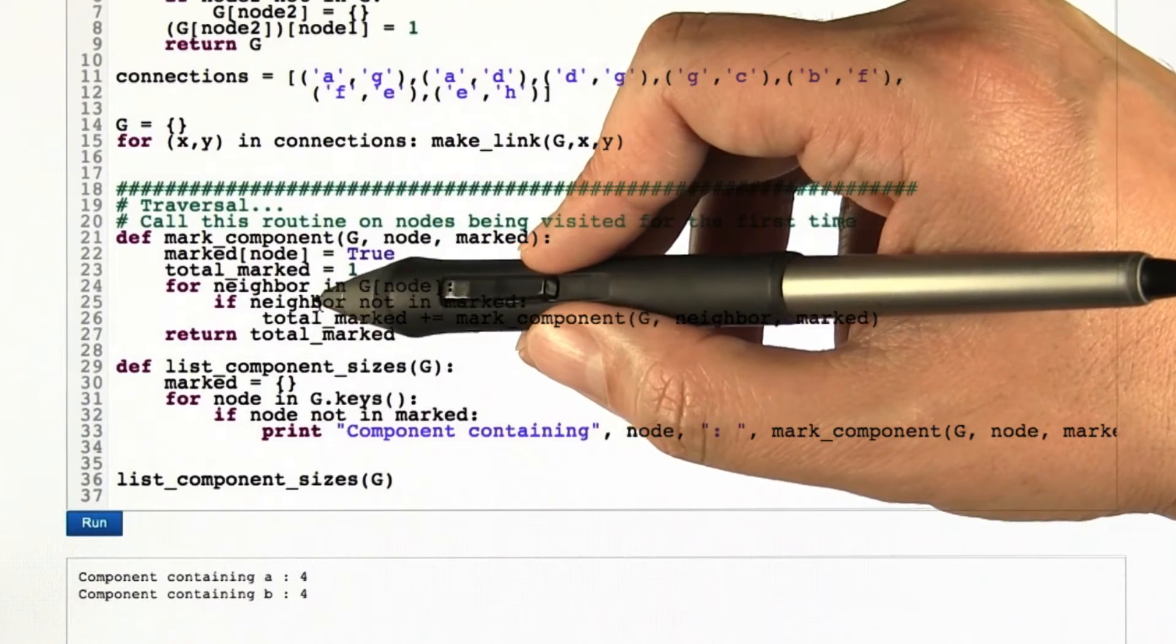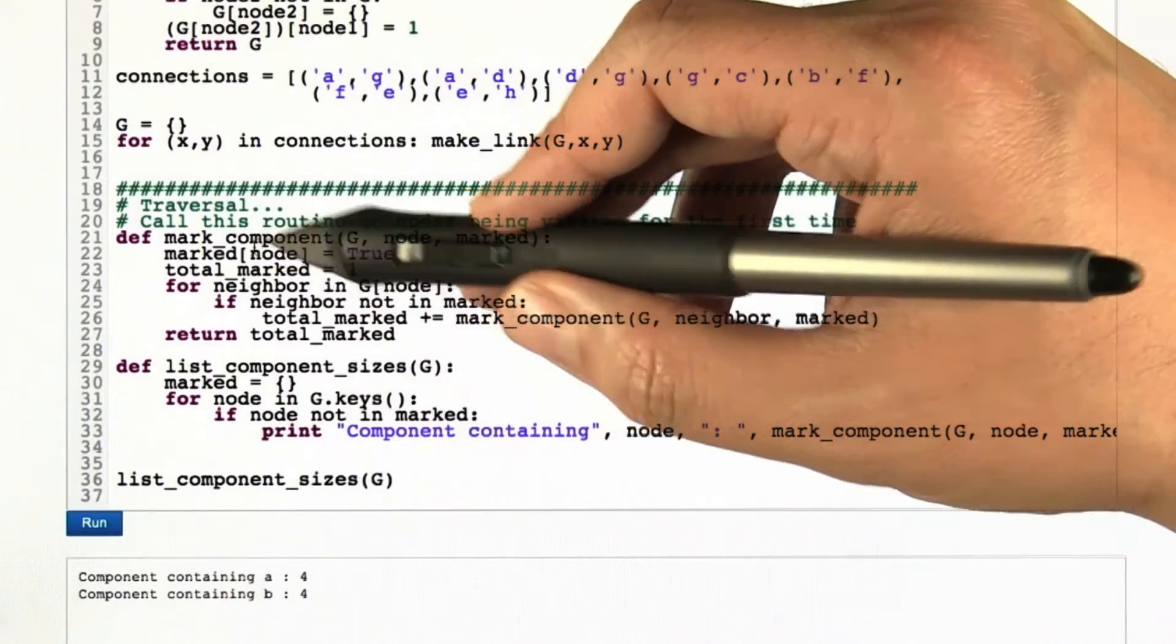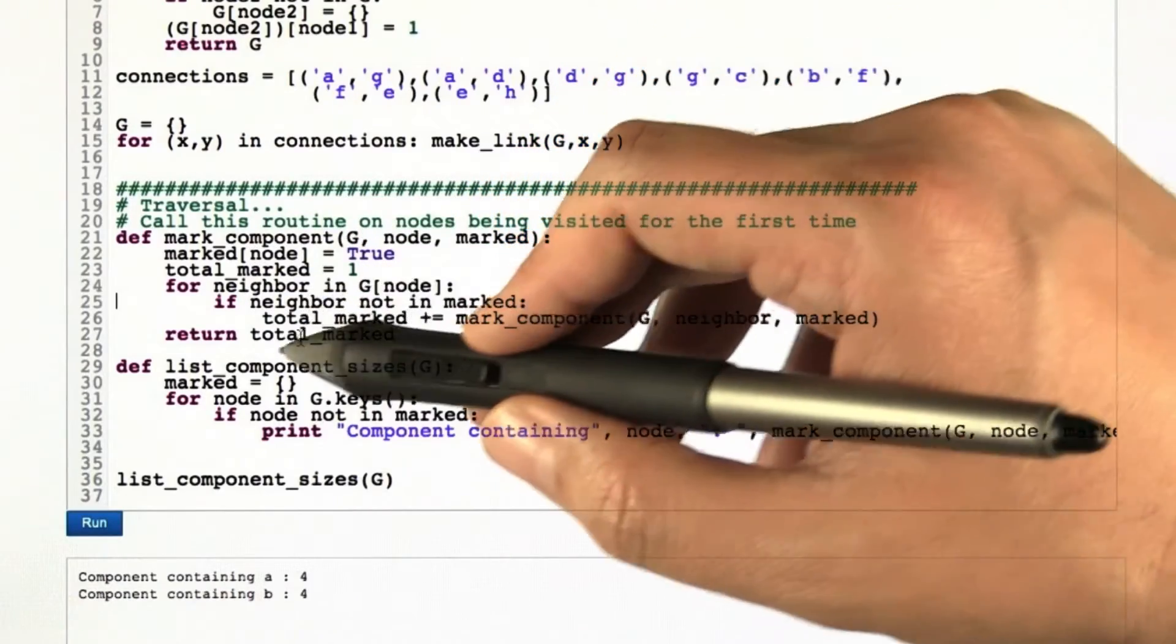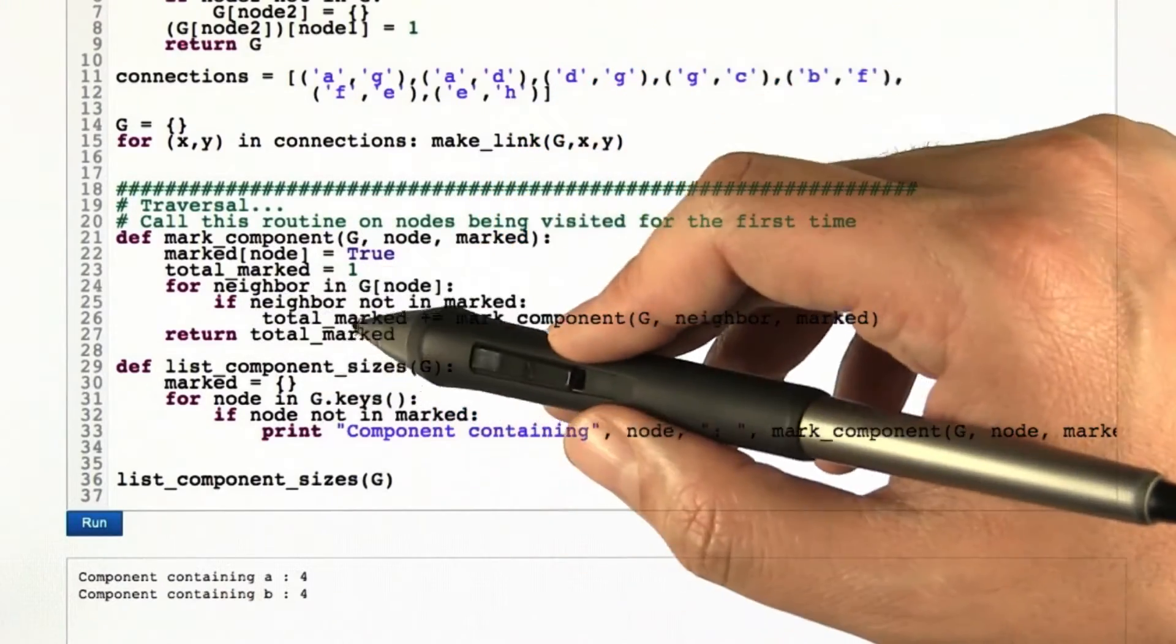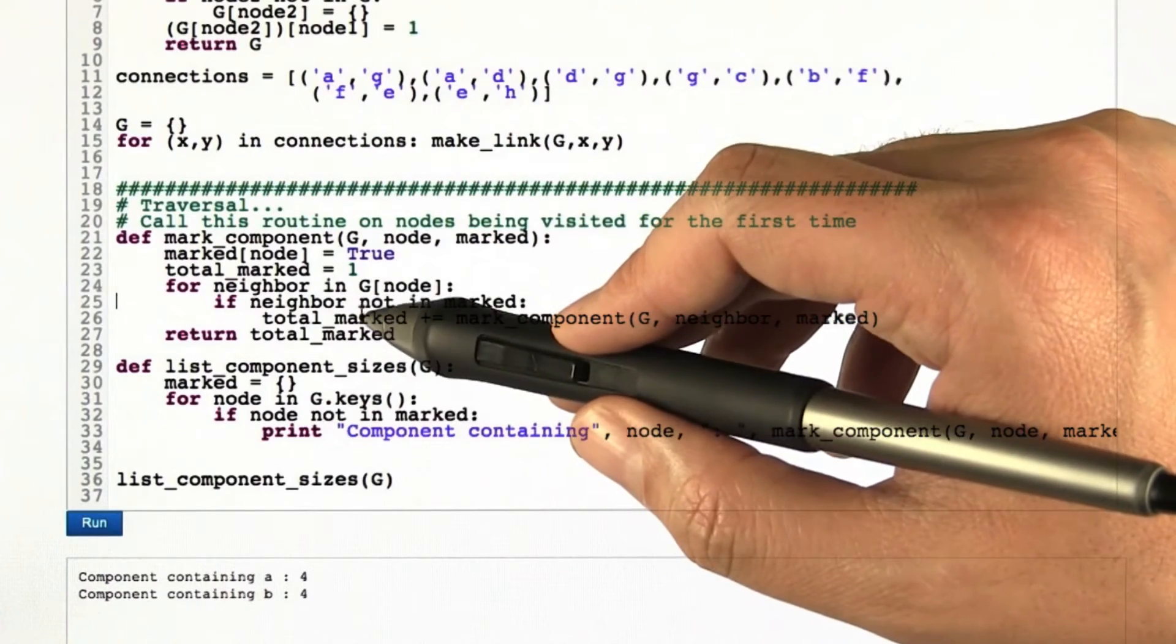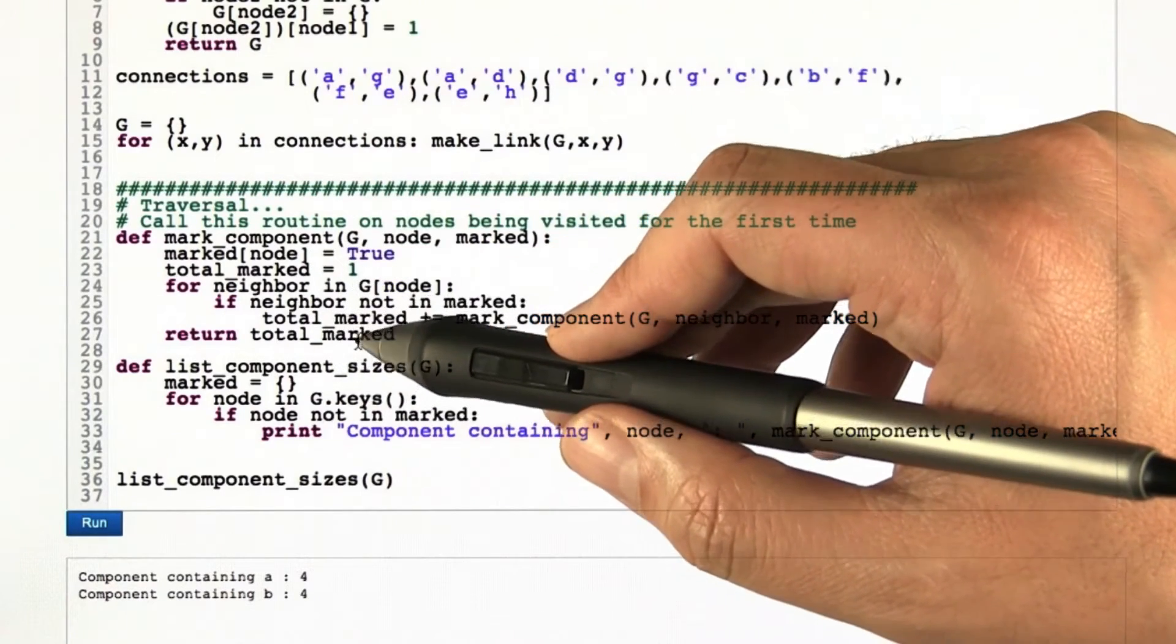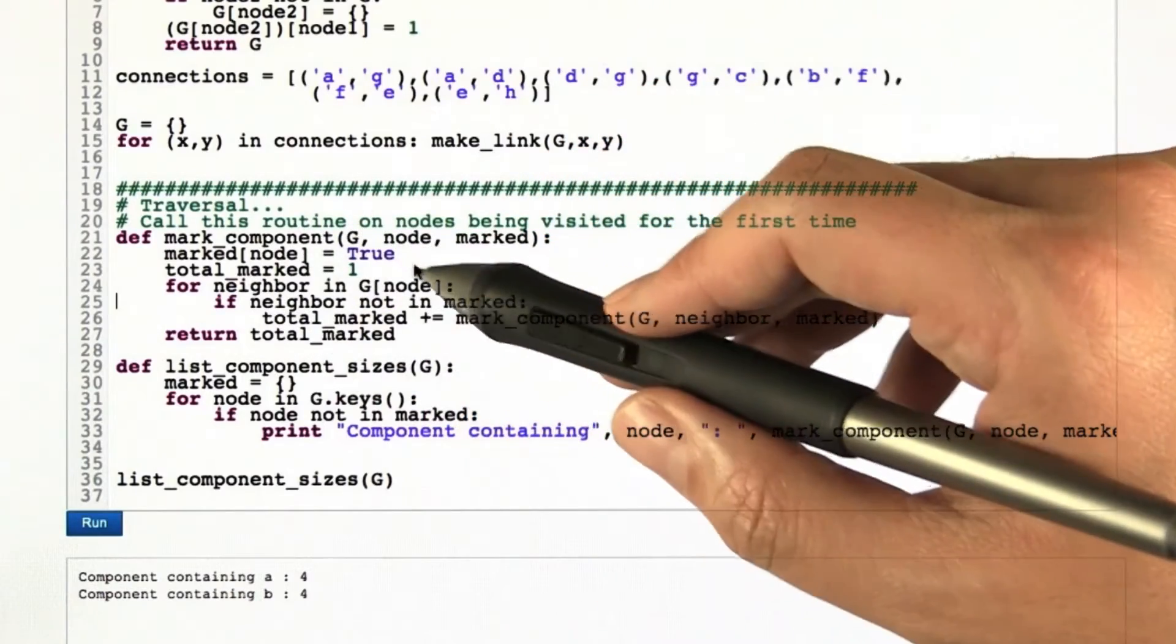When that's exhausted, it means we've now reached out and touched all the nodes that are touchable from that node. And so we return the total that were actually marked as part of this process, and then it's done. So that's the main routine that does all the hard work.